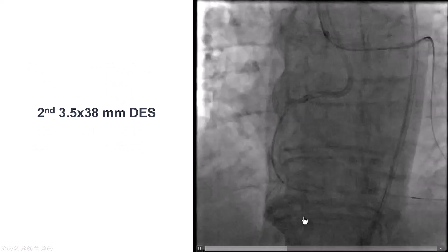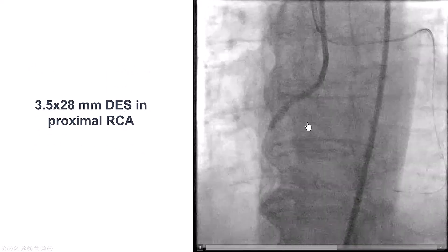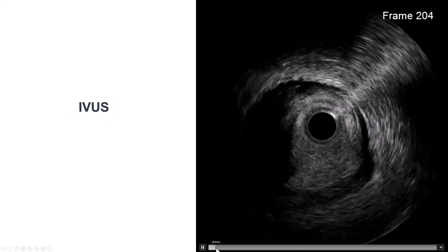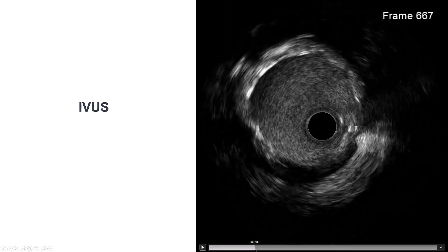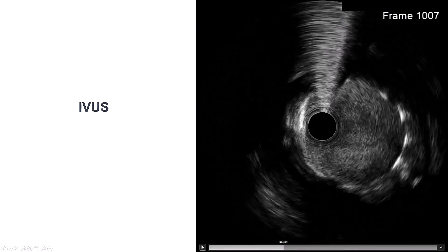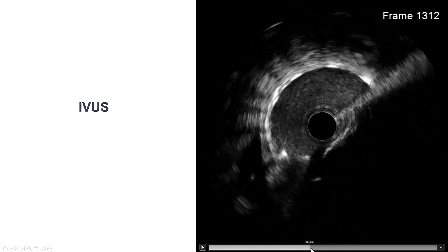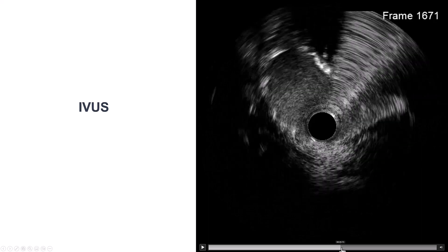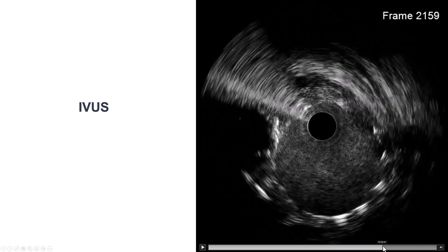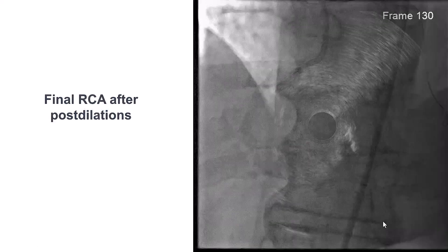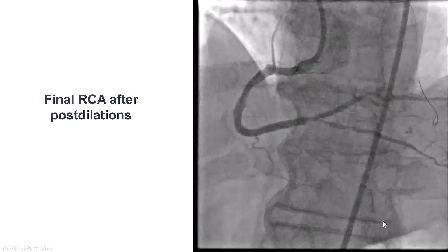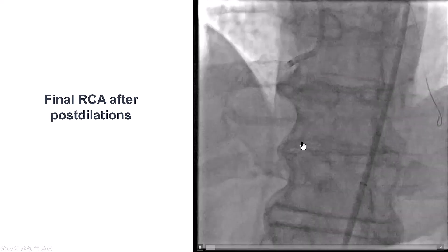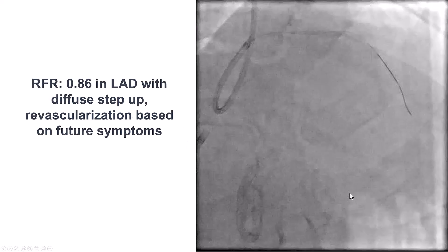We placed a drug-eluting stent distally, overlapped it more proximally with another drug-eluting stent and a third one. We performed intravascular ultrasound given the severe calcification, and we can see that the stent is well expanded — some areas more oval, but overall the area was fairly sizable. The final result showed nice TIMI 3 flow from the RCA all the way to the PDA and the posterolateral branch.